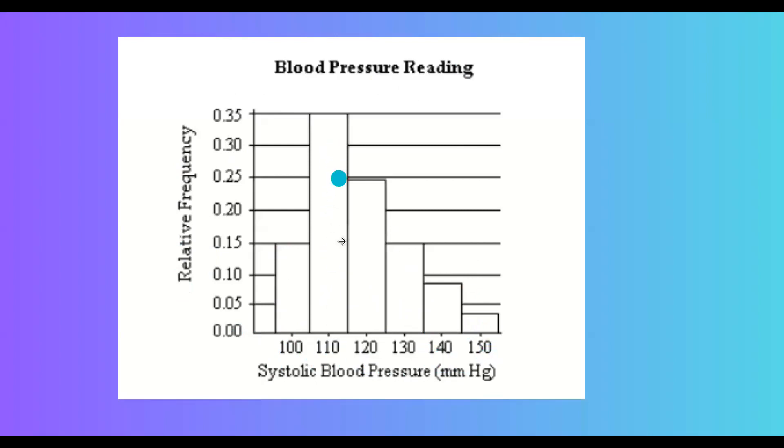The class with the highest relative frequency is this class with midpoint 110, and it is 35%. The class with lowest relative frequency is this class here, with midpoint 150, and the relative frequency is about 3%.